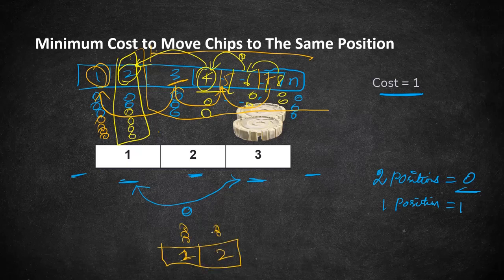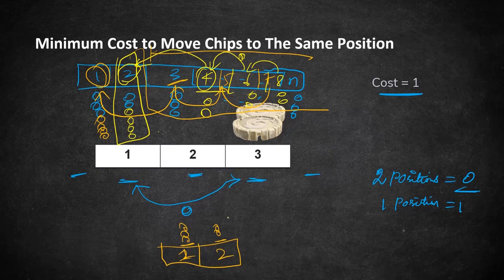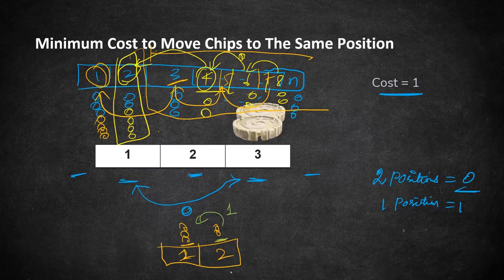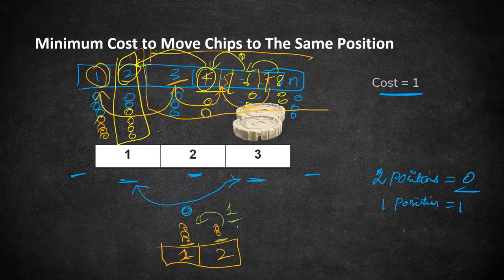So now our task is to either move all the coins from position 2 to 1 or all the coins from position 1 to 2. Either way we are going to move all the coins by one position which is going to cost 1 for each coin. So moving the lesser number of coins to other position would give us the minimum cost of moving all the coins to 1 position.